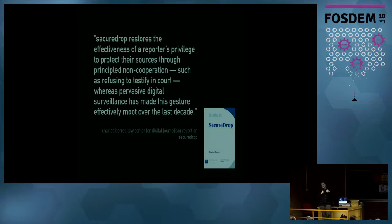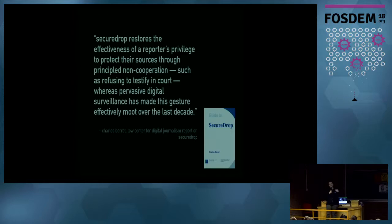It used to be the case that a journalist could protect their source by just not revealing the source's identity when asked, and that was sufficient. But today we know that in the surveillance state that exists in most countries, almost every interaction between one human and another is mediated in some way by a third party, and that third party is collecting data about who is talking to who.